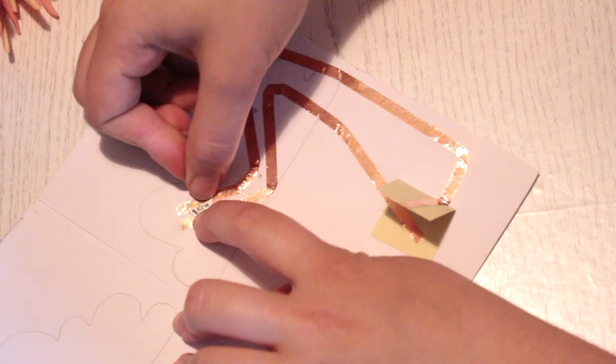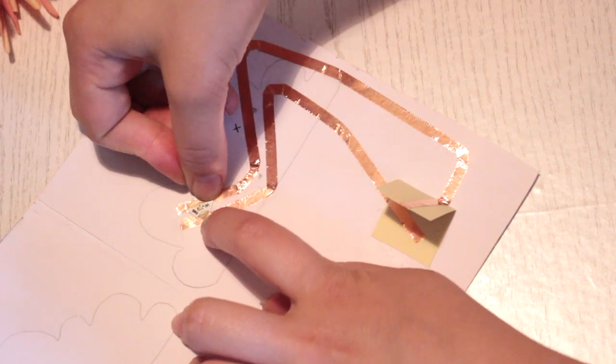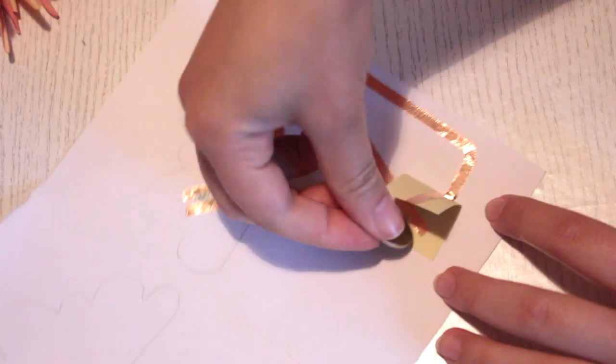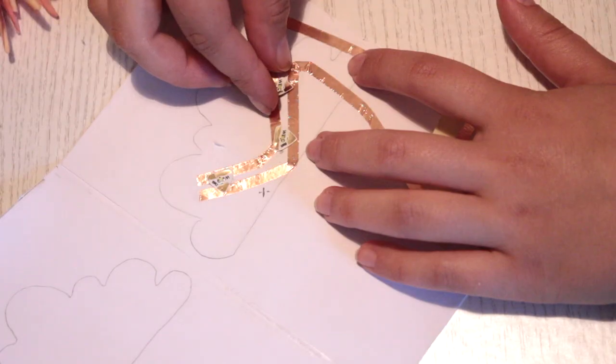So place your lights on the circuit so the negative and the positive sides are facing the same way. Add the rest of your lights.